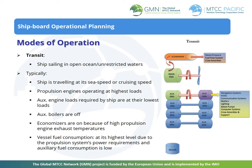Transit mode: the ship is sailing in open ocean or unrestricted waters, typically traveling at its sea speed or cruising speed. Propulsion engines are operating at the highest loads. Auxiliary engine loads required by the ship are at their lowest loads. Auxiliary boilers are off. Economizers are on because of high propulsion engine exhaust temperatures. Overall fuel consumption is at its highest level due to the propulsion system's power requirements, while auxiliary fuel consumption is low.